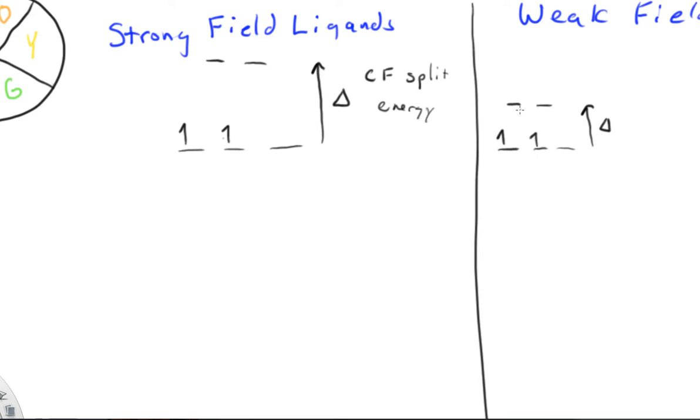An example of a strong-field ligand would be cyanide or carbon monoxide. A weak-field ligand, chloride, fluoride. Those are some examples.